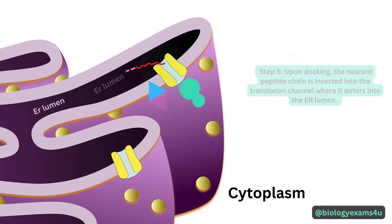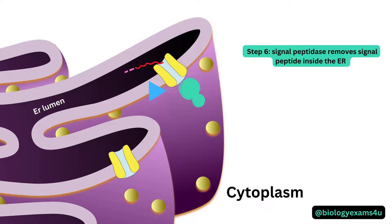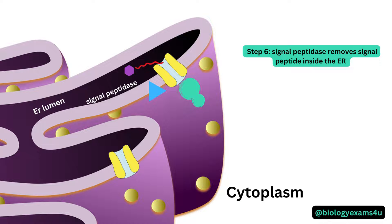Step six: once inside the ER, the signal sequence is removed from the core protein by an enzyme called signal peptidase, ensuring that the signal sequence is not included as part of the mature protein.